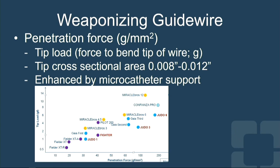Guide wires can be weaponized. There are two aspects to how effective a wire is at penetrating a lesion: the tip load — the amount of force it takes to deflect the tip — and the cross-sectional area of the wire itself. The smaller the cross-sectional area and the higher the tip load, the more penetration force that wire has. That can be further enhanced by loading the wire in a microcatheter, weaponizing the wire.